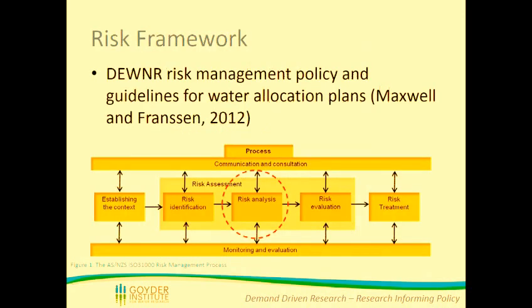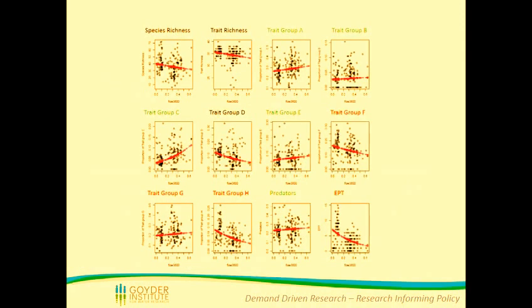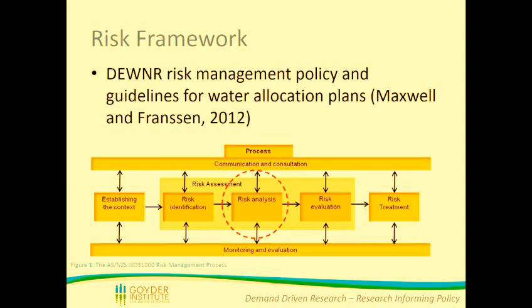Where to next with these data? This is something Doug Green spoke about on Wednesday — using these data to come up with risk profiles. We need to translate the relationships we found into different levels of risk, and that work is still ongoing. These will feed into the general risk management framework used in water allocation plans, particularly informing the risk analysis where we take different flow or management scenarios and predict outcomes for various taxa. We've done similar work in the Barossa Valley and will likely translate this for the Mount Loftys in their next iterations of water allocation plans.